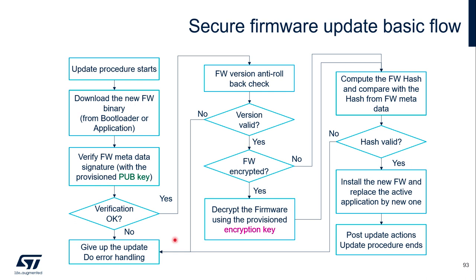This flowchart gives an illustration of the basic flow of secure firmware update. When the update starts, the new version of the binary will be downloaded either from the bootloader or from the application. Then the metadata signature will be verified using the public key embedded in the device. If the signature verification is okay, there will be a version check to make sure we are not going back to an older version. If the version is also valid, the firmware will be decrypted if it is in encrypted format; otherwise this step is skipped. Then the firmware hash will be computed and compared with the value from the firmware metadata. If the hash is also valid, the new version is considered authenticated, and the new firmware will be installed, replacing the active application.